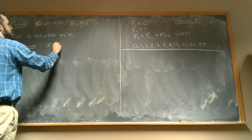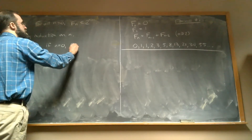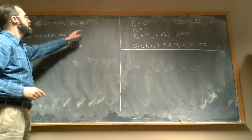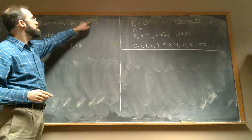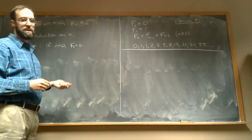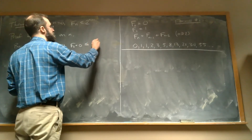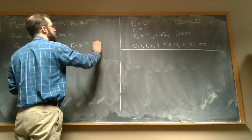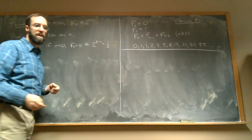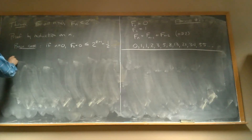If n is zero, then F(0) is zero by definition. And 2^(0−1) is 2^(−1), which is one-half. So zero is indeed less than or equal to one-half. The base case is true.